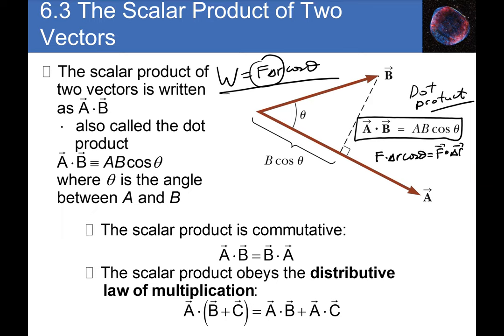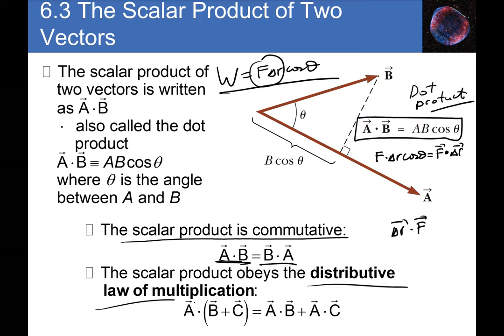So work done equals F dot Δr — the dot product between the force and displacement vectors. The dot product is commutative: A·B = B·A. It also satisfies the distributive law: A·(B + C) = A·B + A·C.